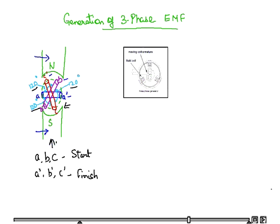The second figure shows this is the magnetic coil, moving coil armature, and these are the field coils. Here this moving coil will rotate and these field coils are going to be stationary.